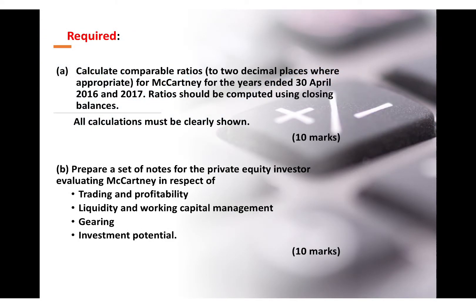The requirement is to calculate comparable ratios using closing balances — this is important. All calculations must be clearly shown; I strongly advise you to show the formula you used and the calculation for at least one ratio. Section B requires preparing a set of notes for the private equity investor in respect of trading and profitability, liquidity, gearing, and investment potential — four dimensions. Normally as investors we always look at at least these four dimensions.